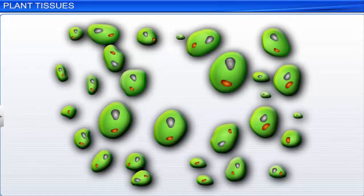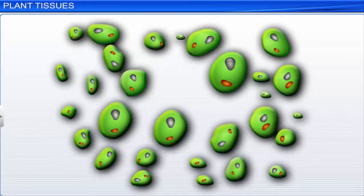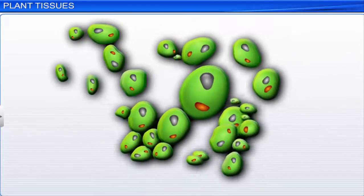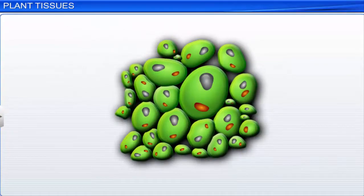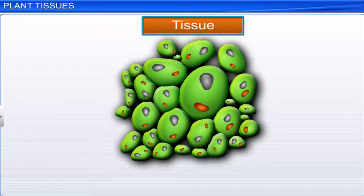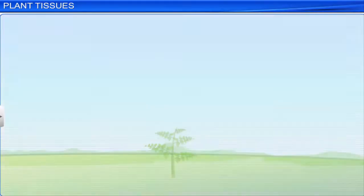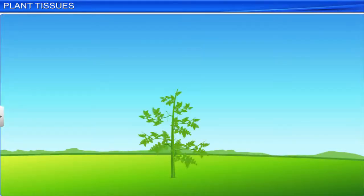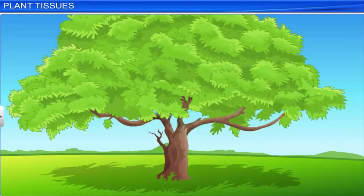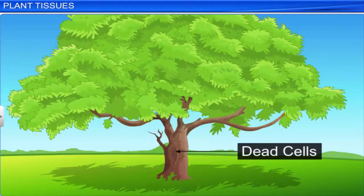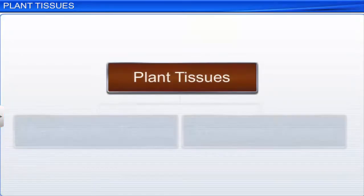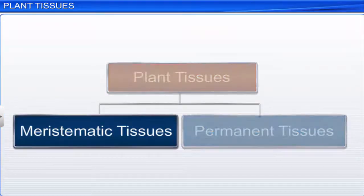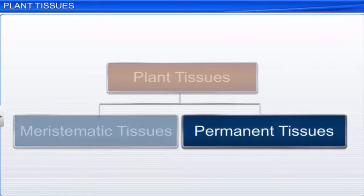A group of cells that are similar in structure and that work together to achieve a particular function forms a tissue. Plants are stationary, and so some of the tissues they have are dead cells which provide mechanical strength. These are the different types of plant tissues: meristematic and permanent tissues.